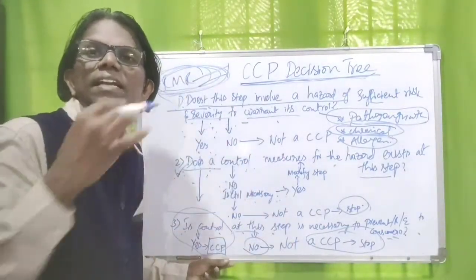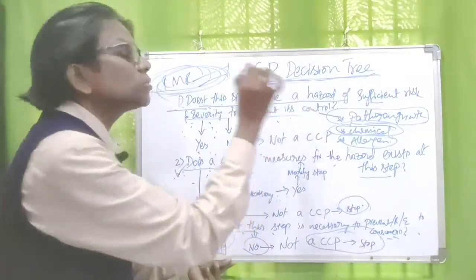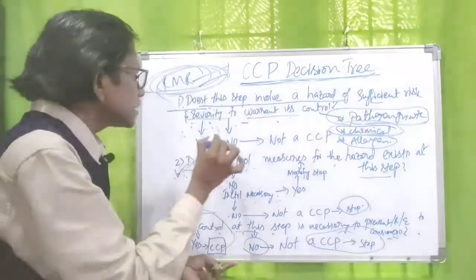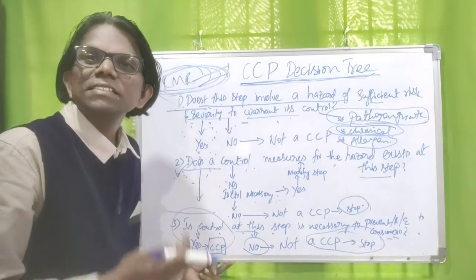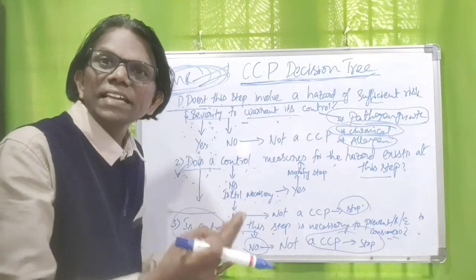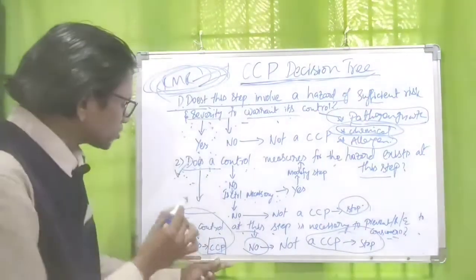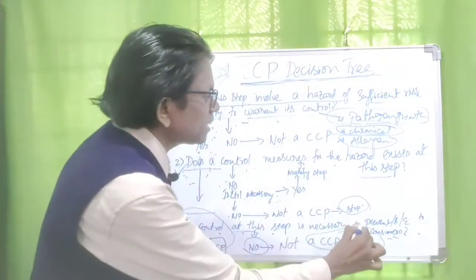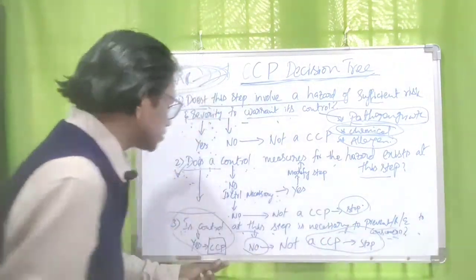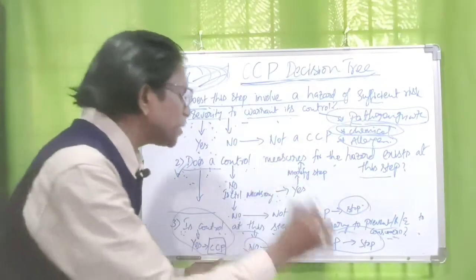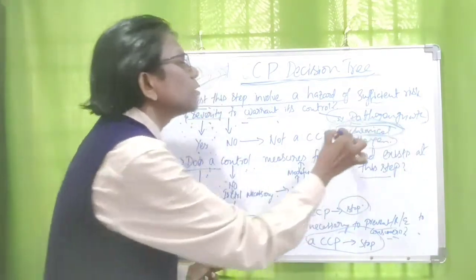At raw material receiving stage, you take the supplier declaration regarding non-usage of prohibited drugs. The first question is yes — the hazard is of sufficient risk and severity. The second question: does a control measure for the hazard exist at this step? Yes — the control measure is a supplier declaration regarding non-usage of prohibited aquaculture drugs. The third question: is control at this step necessary to prevent, eliminate, or reduce the hazard to consumers? Yes — the supplier declaration prevents it at raw material receiving stage. Therefore, raw material receiving stage for aquaculture drugs is a critical control point.